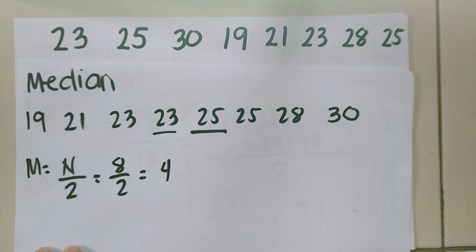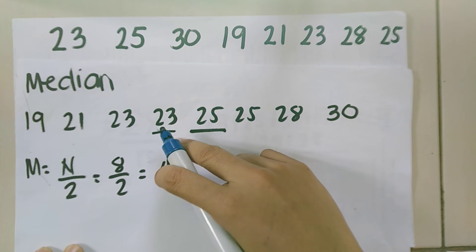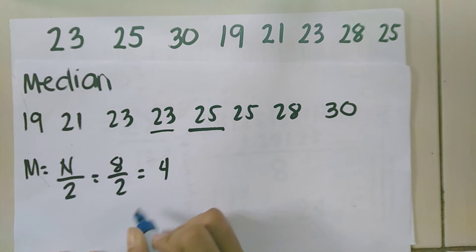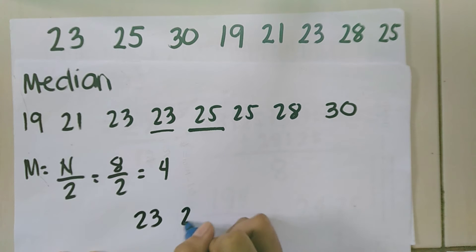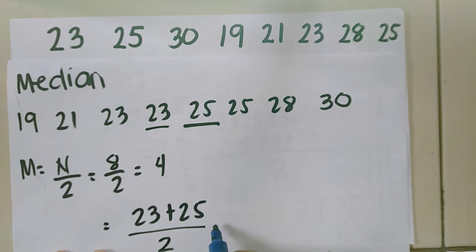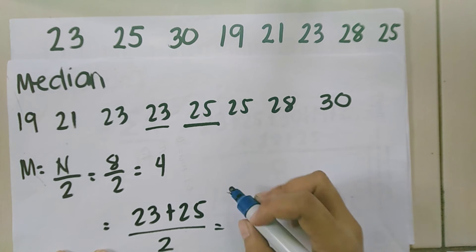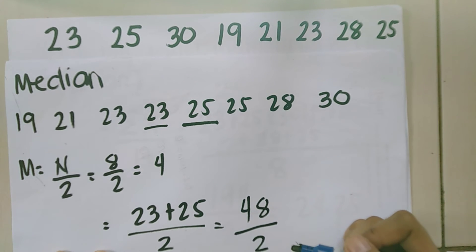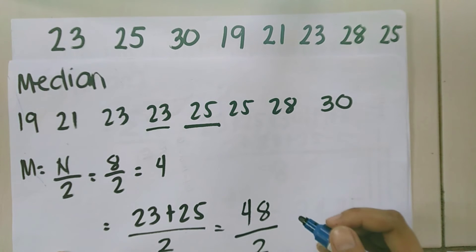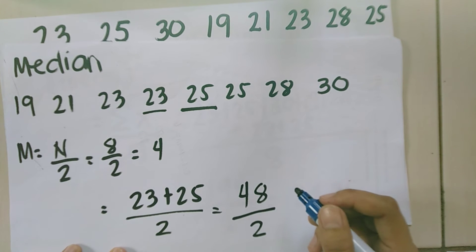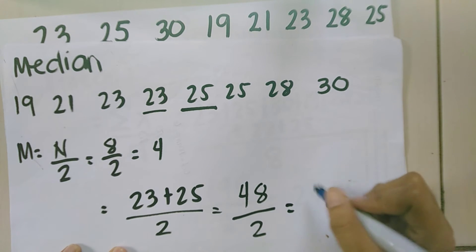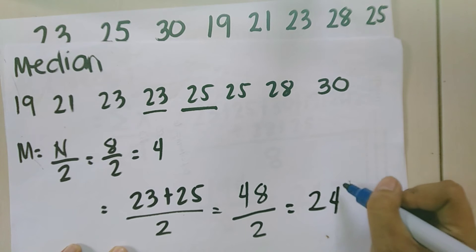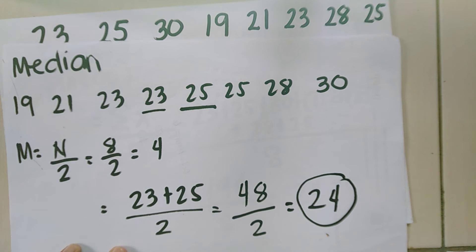To find the median, we take the 2 middle numbers — 23 and 25 — add them, then divide by 2. 23 plus 25 is 48, divided by 2. 48 divided by 2 is 24. So our median is 24.